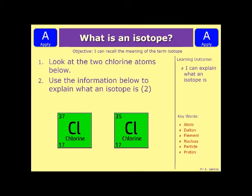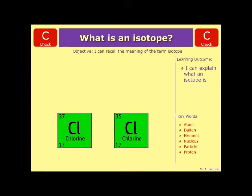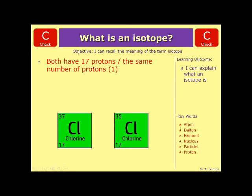Let's see how you've done. So the first thing then is to point out what is the same in both of them. In this case, it is the number of protons. So your first marking point is saying they both have 17 protons, or they have the same number of protons.